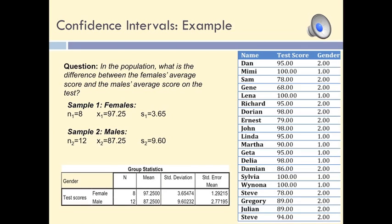In order to make inferences about the difference between the two groups in the population, we need to know the sample size, the mean, and the standard deviation of each group. In this example, there are 8 females, their mean test score was 97.25, and the standard deviation for this group was 3.65. The male group includes 12 individuals, has a mean of 87.25, and a standard deviation of 9.6. These statistics can easily be obtained using statistical software. In fact, they are automatically computed when we estimate a confidence interval or conduct a test of significance. The group statistics table is the part of the SPSS output that provides this information.